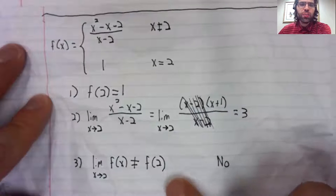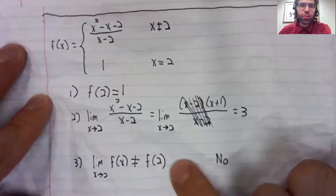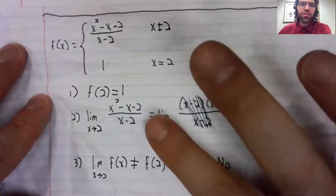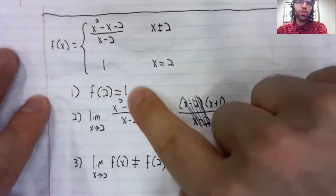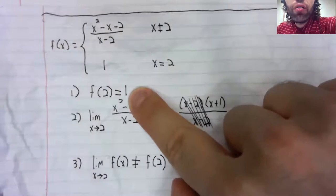But the function wasn't continuous at two, because this limit, three, does not equal f of two.